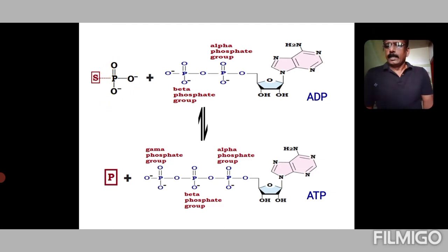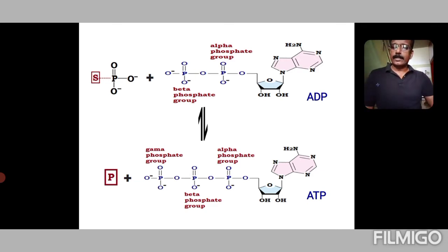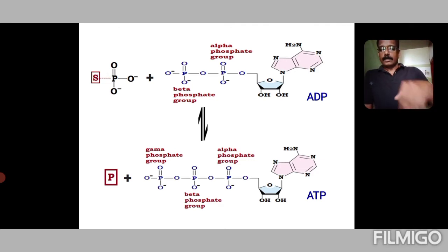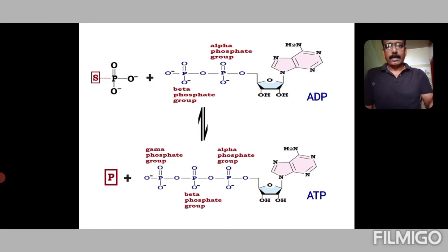Basically, this is transferring from a high energy substrate into a lower energy product. This process uses some of the released chemical energy — the Gibbs free energy — to transfer the phosphoryl group from this particular substrate to ADP or GDP so as to form ATP or GTP respectively.